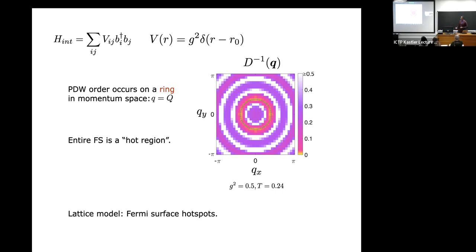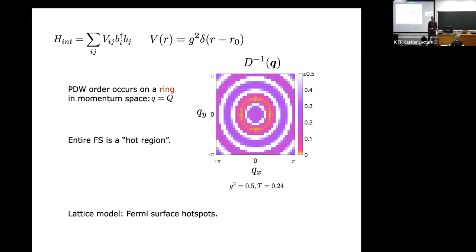On a lattice, by contrast, condensation would occur at discrete momenta related by rotational symmetry (e.g., 90-degree rotations), and then you'd see hot spots. Regarding fluctuation-driven first-order transitions à la Brazovsky: the beauty of the large-N Migdal-Eliashberg theory is that it suppresses all those effects and the transition remains continuous. On the question of where the Fermi wave vector is: capital Q can be arbitrarily different from k_F; physics does not depend on the ratio between capital Q and k_F, provided Q is small compared to k_F in the regime where we compute.